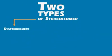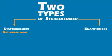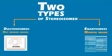There are two types of stereoisomers: diastereomers and enantiomers. Diastereomers are stereoisomers that are not mirror images of each other. Enantiomers are stereoisomers that are non-superimposable mirror images of each other.